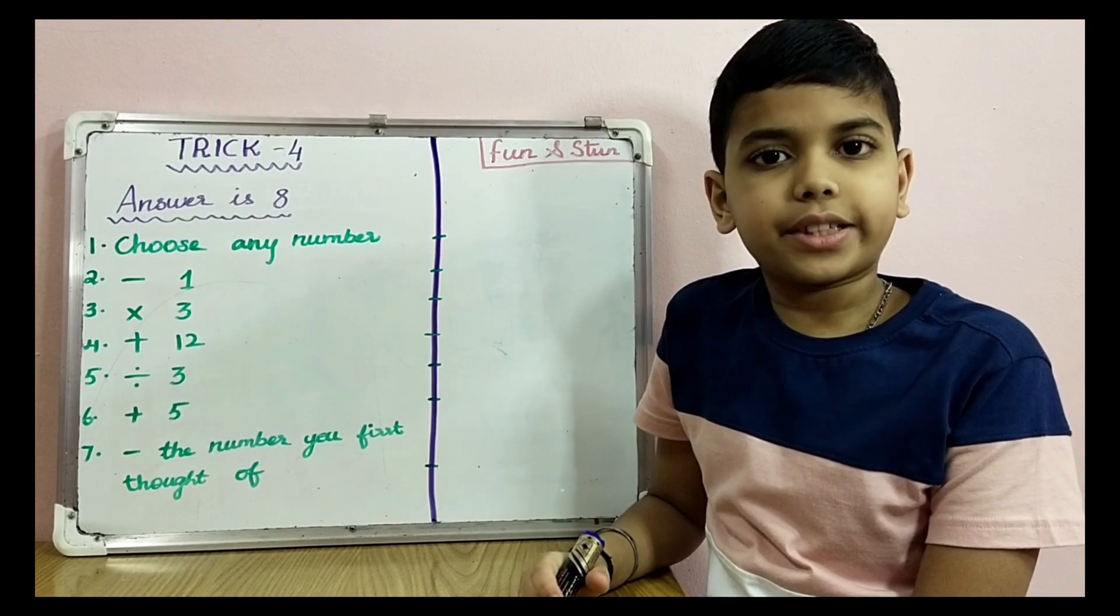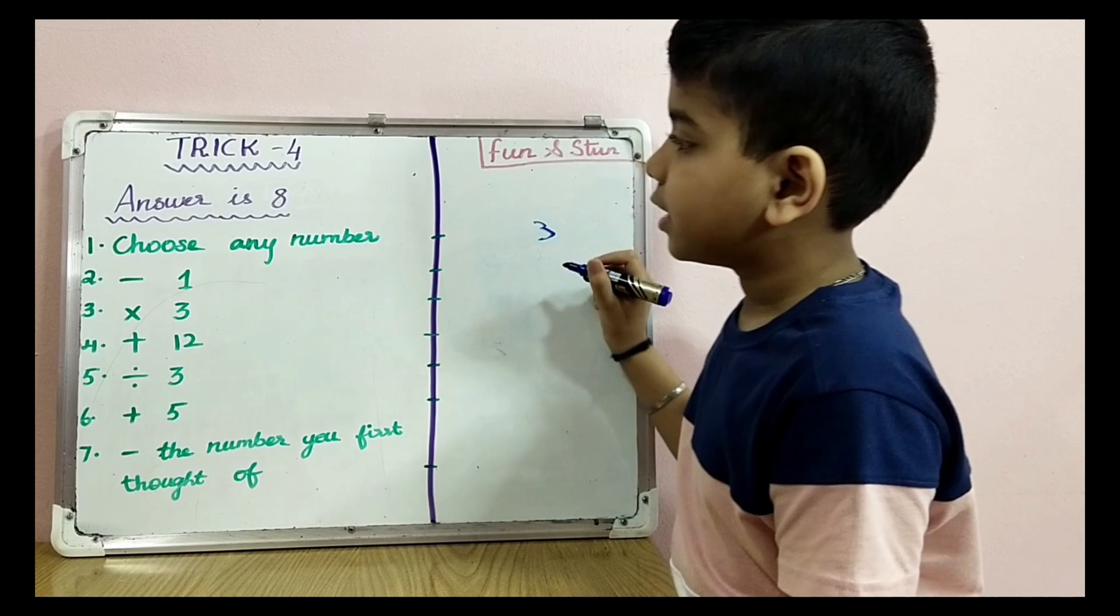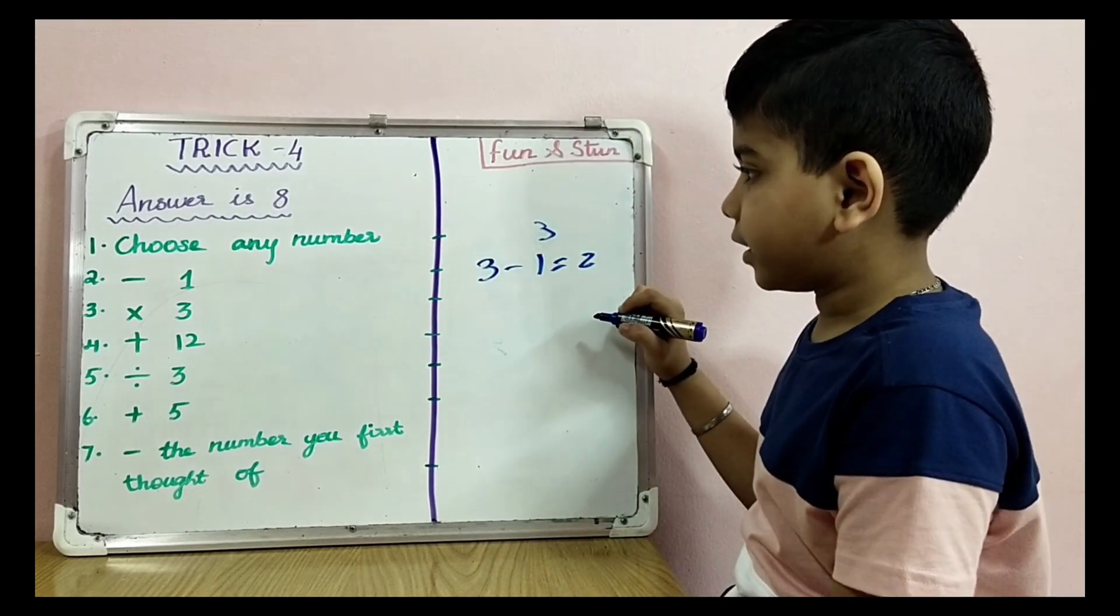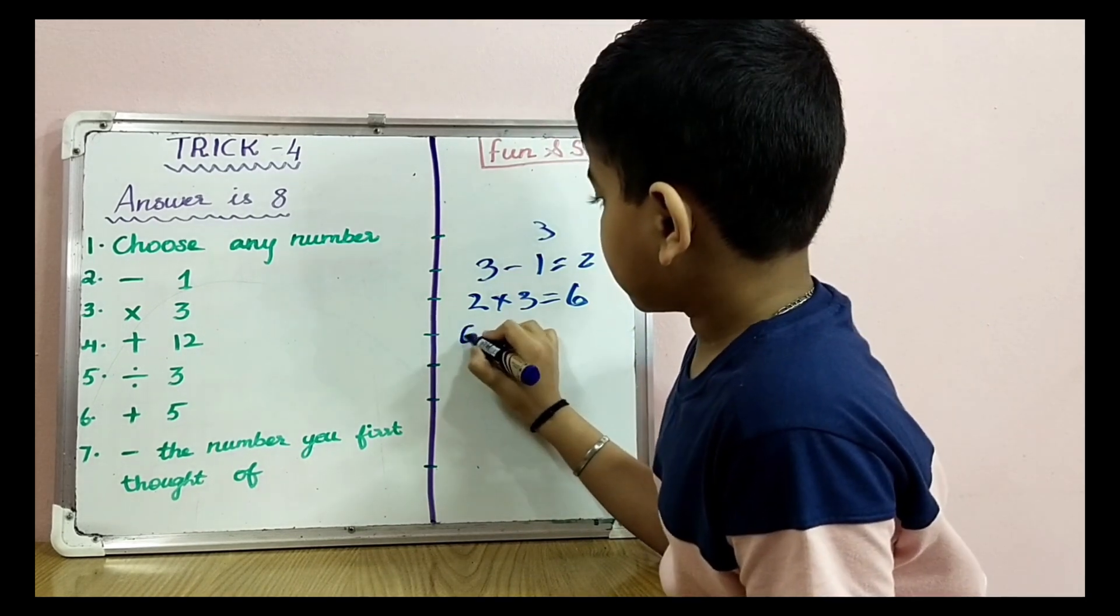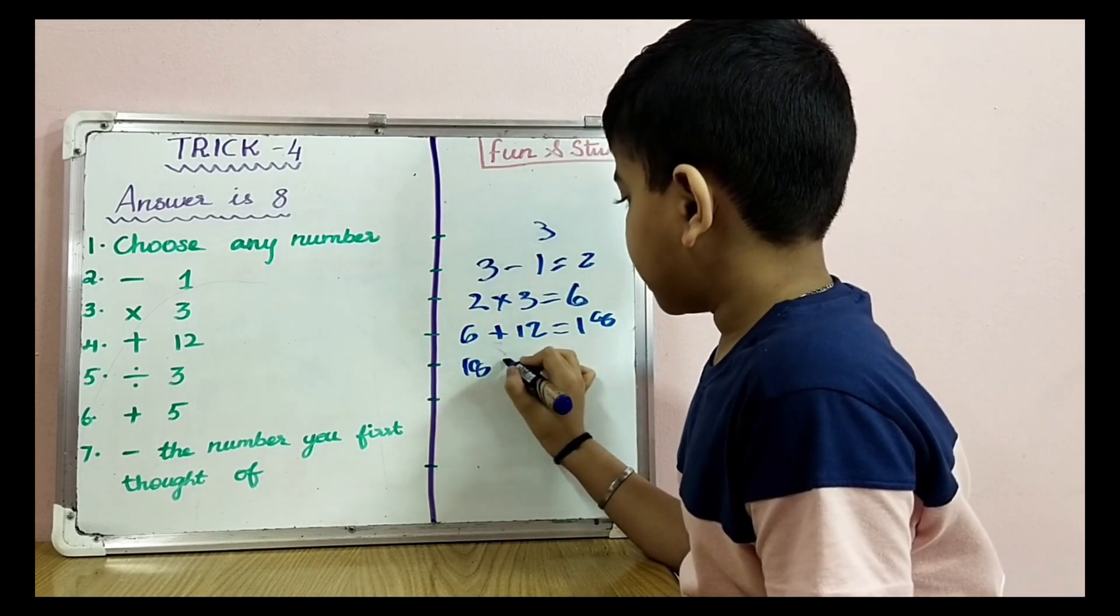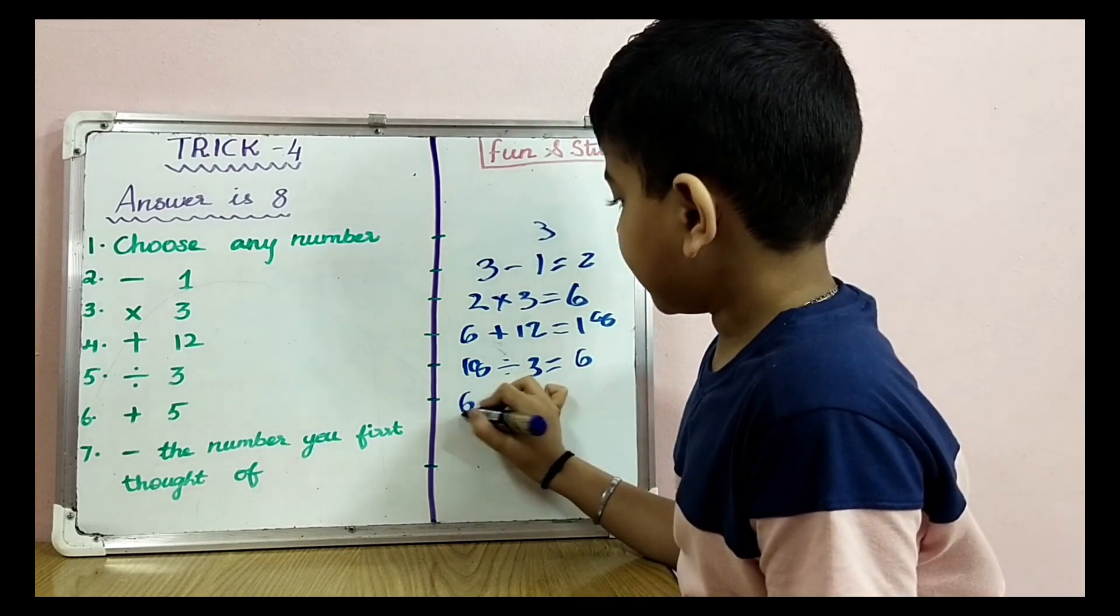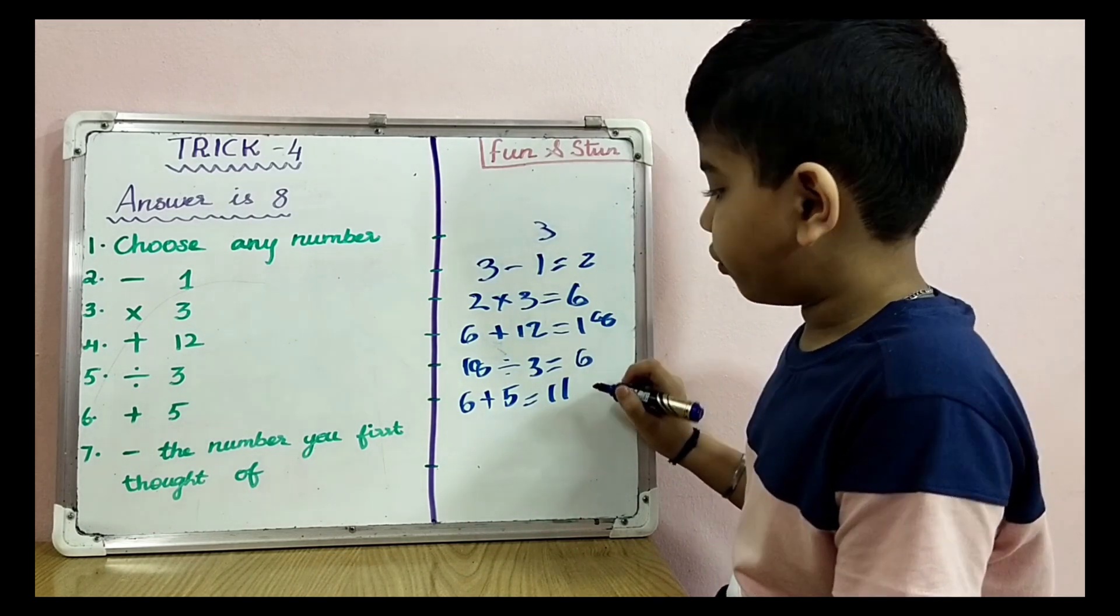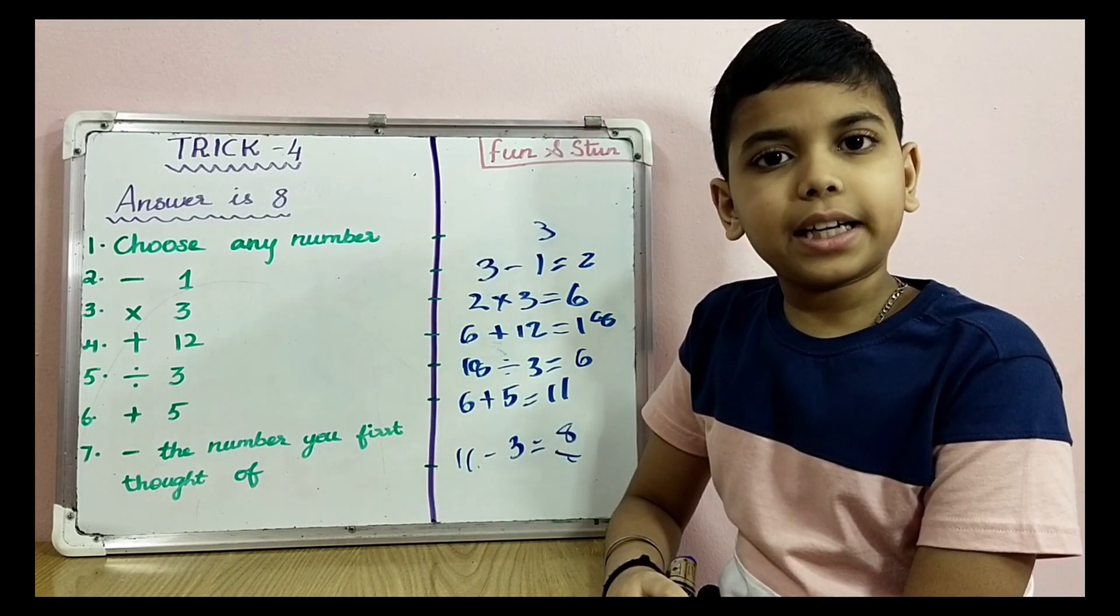Now it's time for Trick 4. Answer is 8. Choose any number. Let me choose 3. Subtract 1: 3 minus 1 equals 2. Multiply by 3: 2 times 3 equals 6. Add 12: 6 plus 12 equals 18. Divide by 3: 18 divided by 3 equals 6. Add 5: 6 plus 5 equals 11. Subtract the number you first thought of: 11 minus 3 equals 8. Try it with a bigger number.